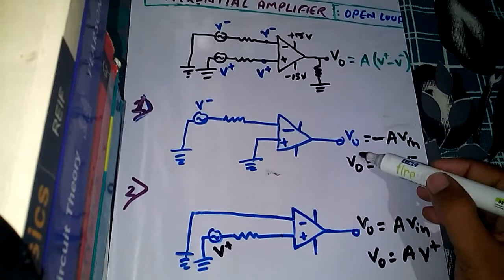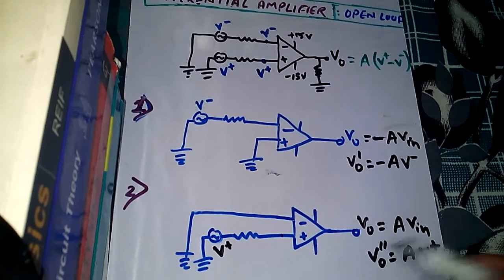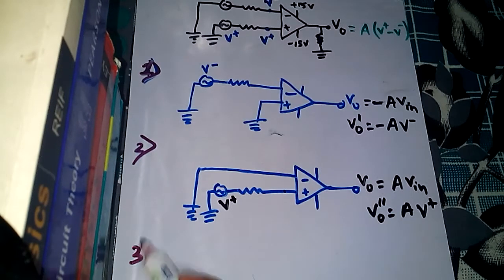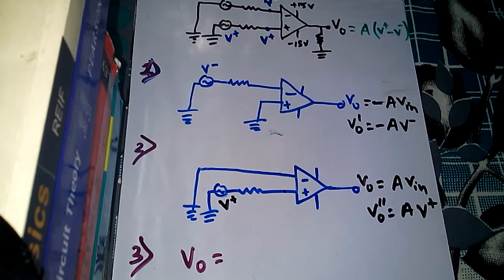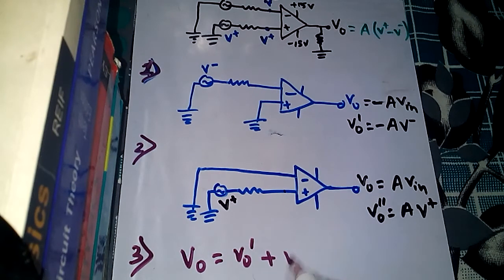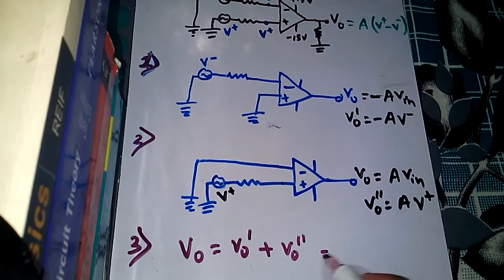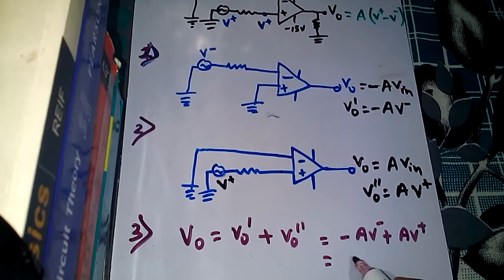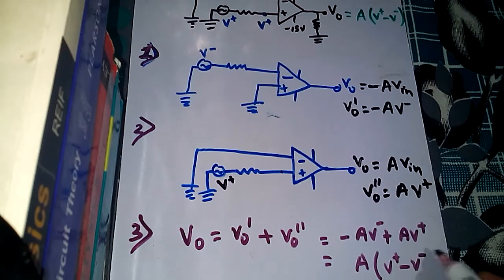Let's name the first output V-not-prime and the second output V-not-double-prime. The third step: the total output voltage equals the addition of these two voltages. That gives us minus A·V-minus plus A·V-plus, which equals A times (V-plus minus V-minus). This is the final output voltage formula for the differential amplifier with open loop.